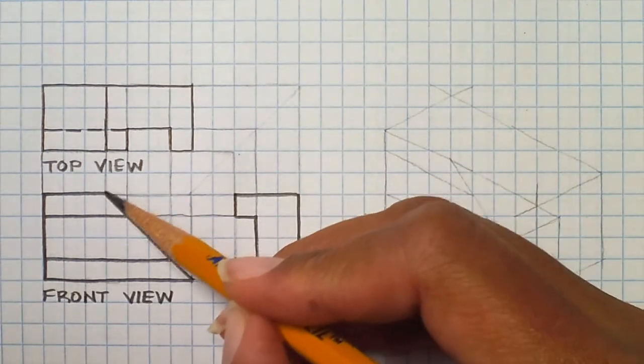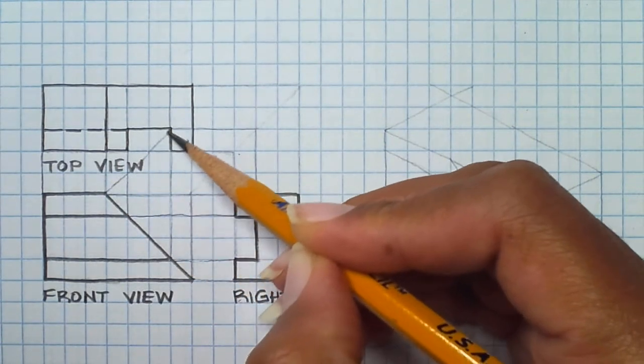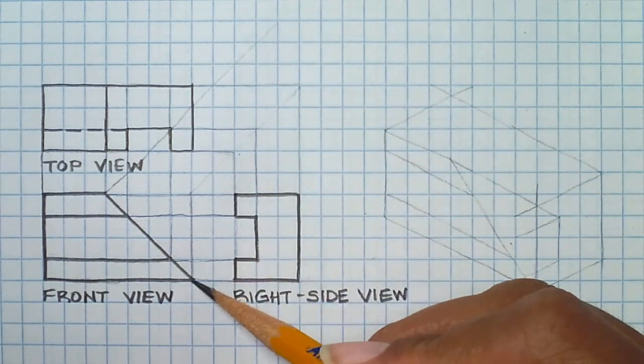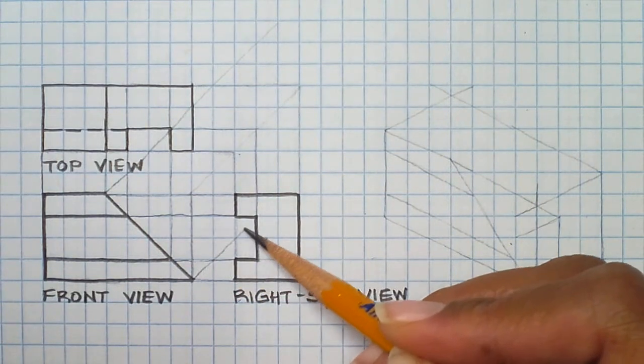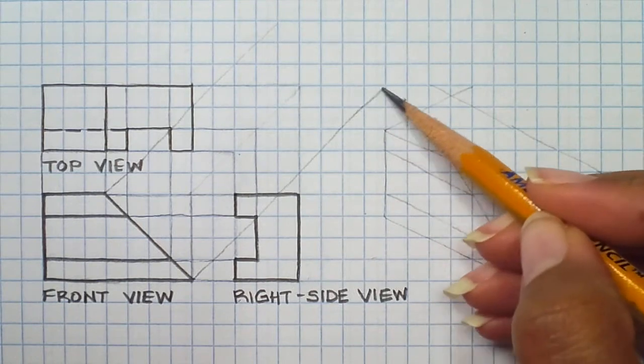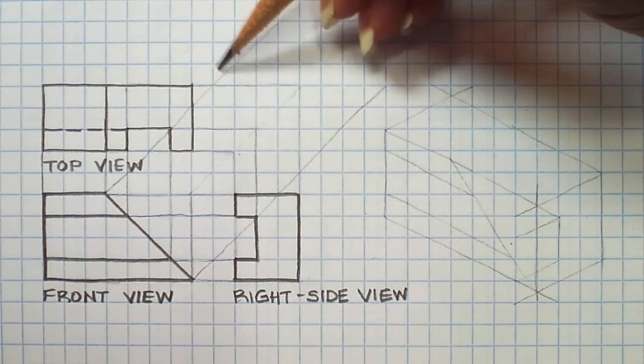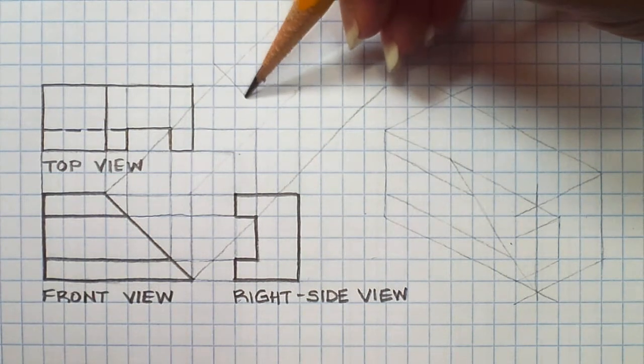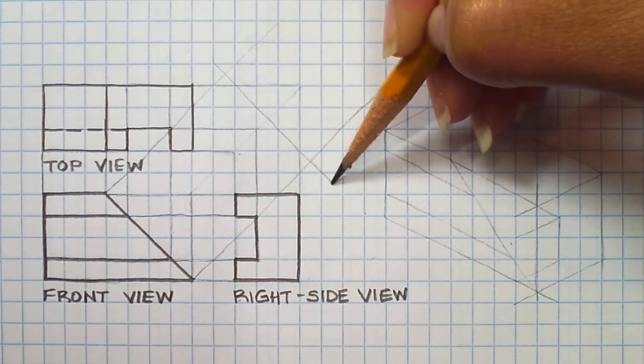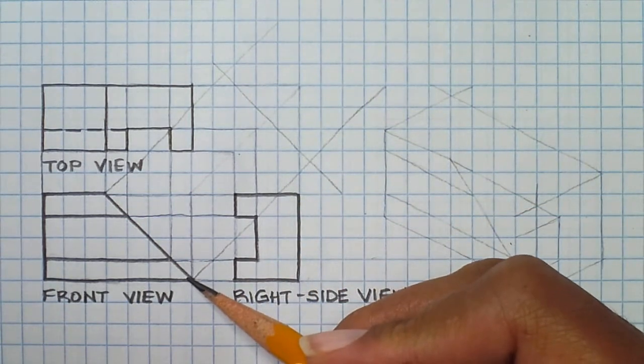So we'll do the auxiliary view. I'm projecting perpendicular from my surface or 90 degrees, and I'm going to go past my views. I want to make sure that they do not overlap or object line to object line do not overlap. Once I'm past it, I'm going to construct my auxiliary reference plane. It is 90 degrees from this projection line or parallel to our inclined plane.